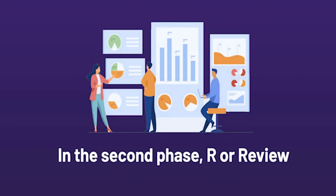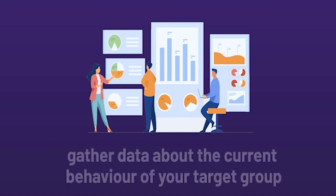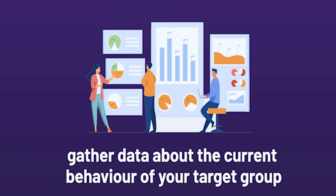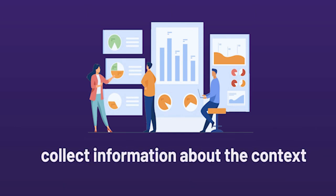In the second phase, R, or Review, you need to gather data about the current behaviour of your target group. You also need to collect information about the context.